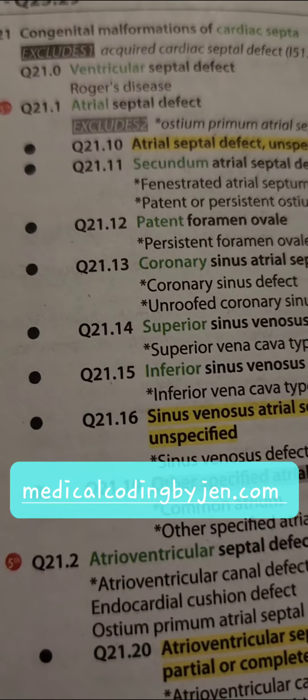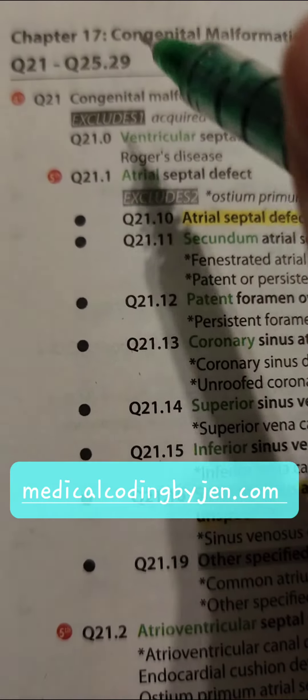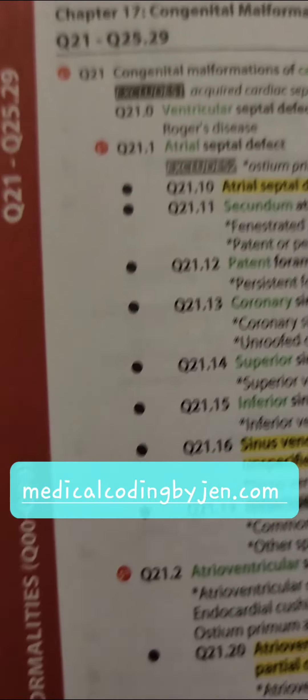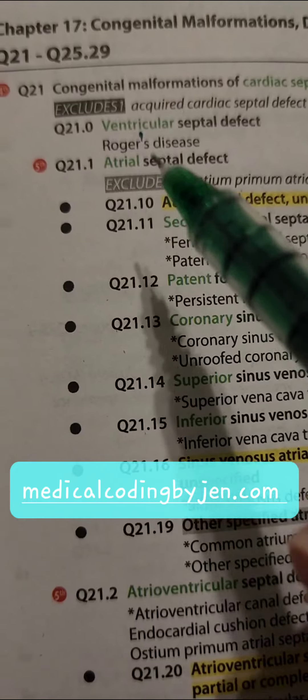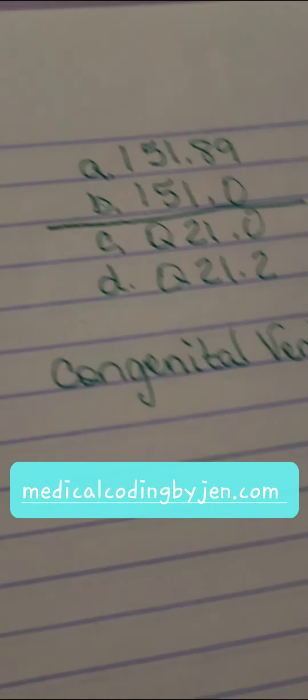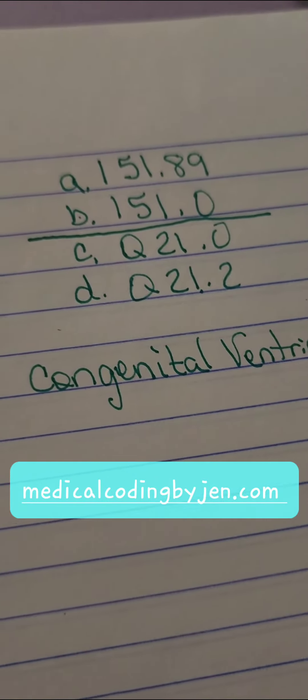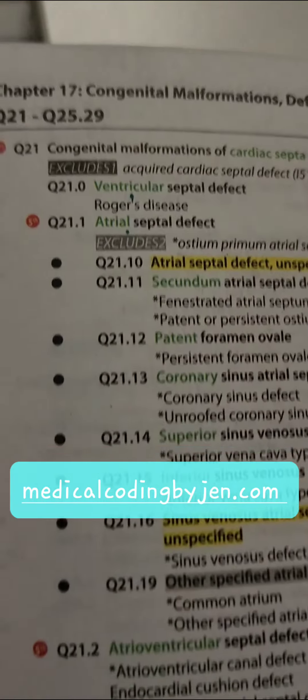If you're using the AAPC version of the ICD-10 book, it's super easy to see what your differences are between the codes because they highlight them in the color green. So one code set is from ventricular, the other one is atrial. We can check our question, just word search for the ventricular, and we know our answer is option O because that is the only one that's ventricular.